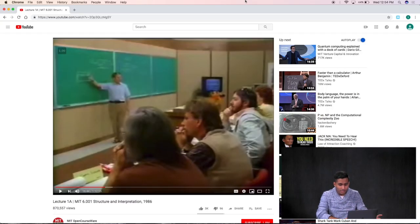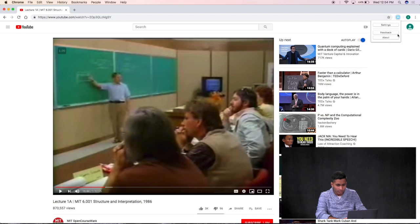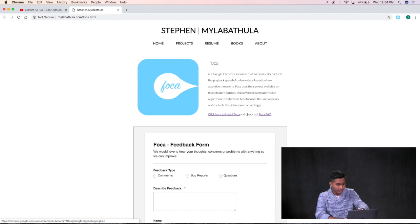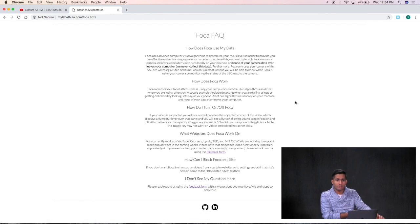Go over to the Chrome store and download it today. If you have any questions, you can always click this button right here and hit Feedback, which will take you directly to the Feedback page that we have. Or if you click About, you'll go to the FOCA homepage. We have the feedback form embedded right here, the link to install FOCA. And we have an FAQ right here, which gives you some answers to frequently asked questions that you may have.